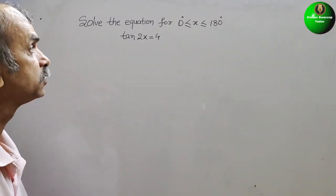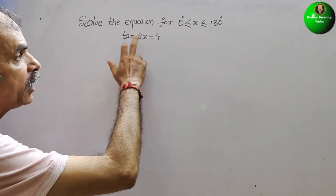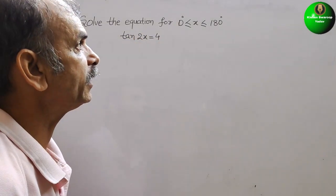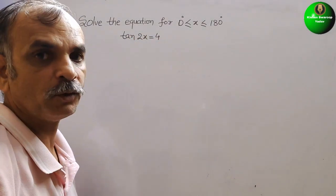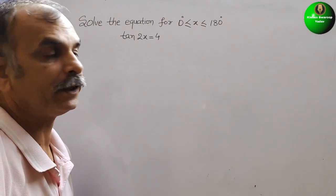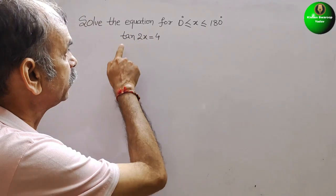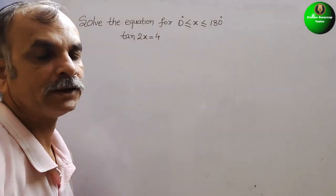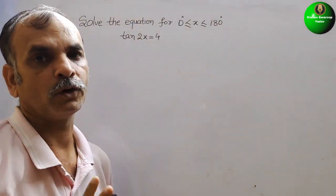Your question is: solve the equation for 0° ≤ x ≤ 180°. They have given tan 2x = 4.